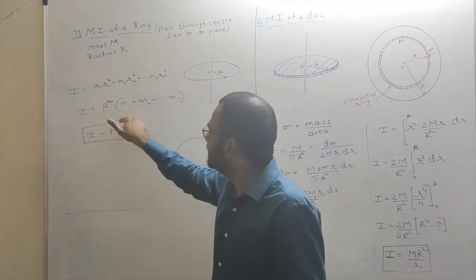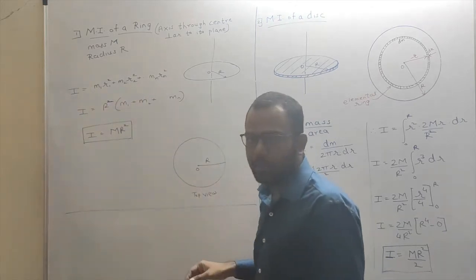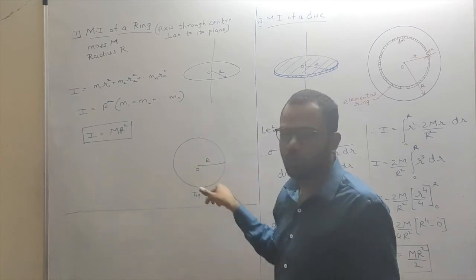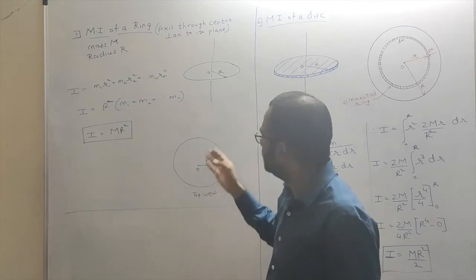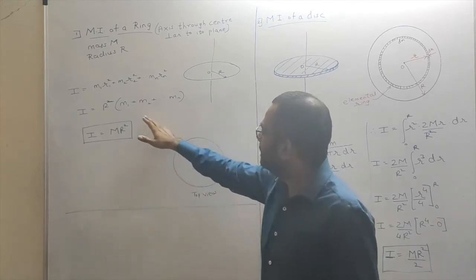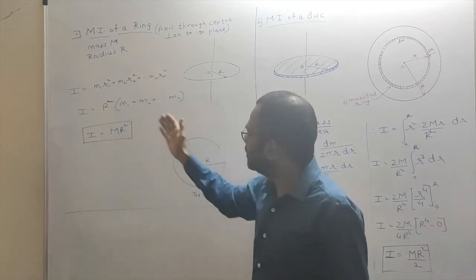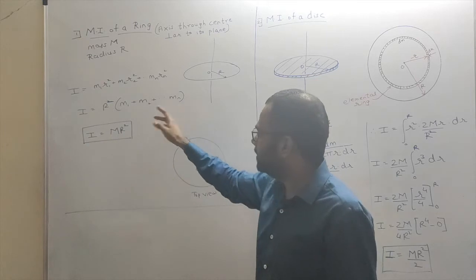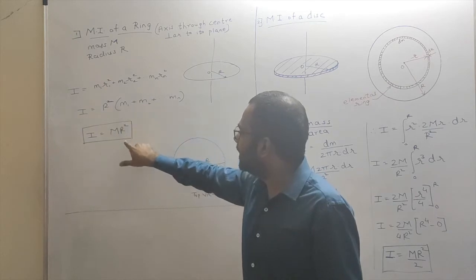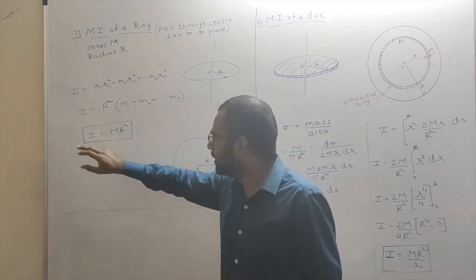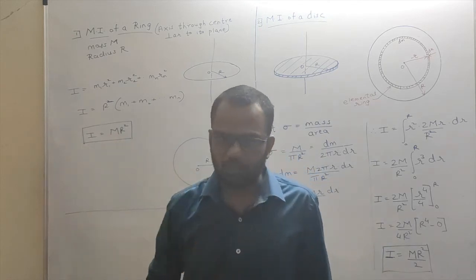Because each and every particle is at a distance R from the axis of rotation, R² is constant and taken outside. Inside the bracket we have the sum of the masses of the particles: m1 + m2 + ... + mn. The summation of mass of all the particles is nothing but the total mass of the ring, capital M. So the moment of inertia of the ring about this particular axis will be I = MR².